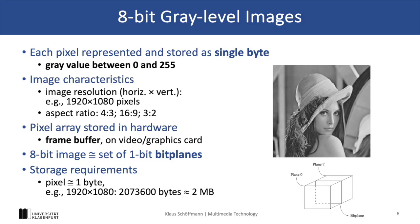In 8-bit grayscale images, each pixel is stored as a single byte, allowing us to save 256 different intensity levels from black to white. This representation is often used when color is not important, but storage requirements should be kept low.